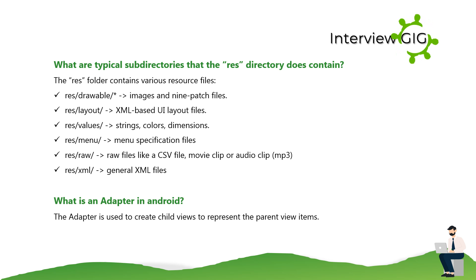What are the typical subdirectories that the res directory contains? The res folder contains: res/drawable — images and nine-patch files; res/layout — XML-based UI layout files; res/values — strings, colors, and dimensions; res/menu — menu specification files; res/raw — raw files like CSV files, movie clips, or audio clips (MP3); res/xml — general XML files.